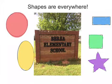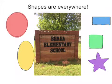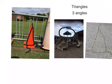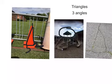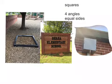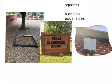There are shapes everywhere! Triangles have three angles. A square has four angles and four equal sides.